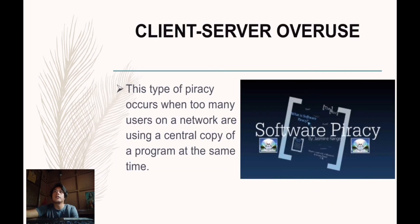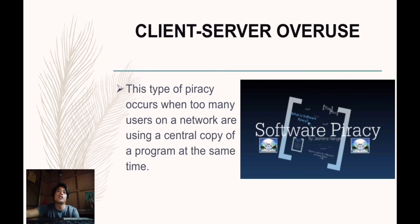Next is client-server overuse. This type of piracy occurs when too many users on a network are using a central copy of a program at the same time. If you have a local area network and installed programs on the server for several people to use, you have to be sure your license entitles you to do so. If you have more users than allowed by the license, that's overuse.